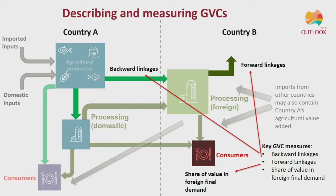The first is backward linkages — how much foreign value underpins our own exports. So if we observe a $10 export from Australia, how much of that came from other countries? The other linkage we're interested in is forward linkages — where our exported value ends up. How much of our value added ends up in another country's exports? For example, how much of Australian wheat is in Indonesian flour exports. The last relationship is foreign final demand — how much of our production ends up in consumers' overseas shopping baskets.